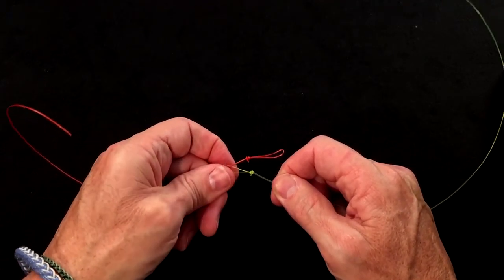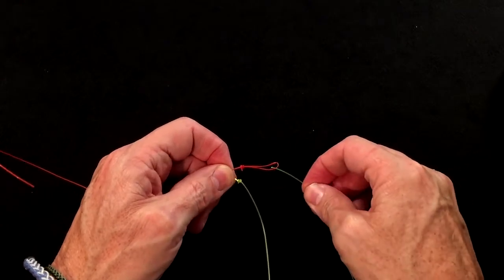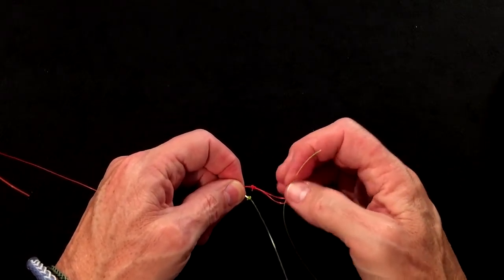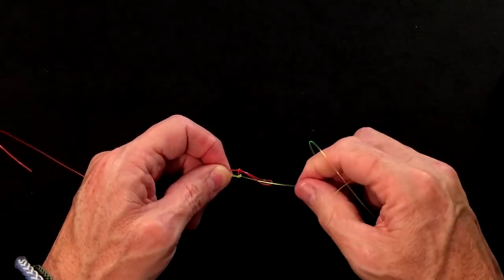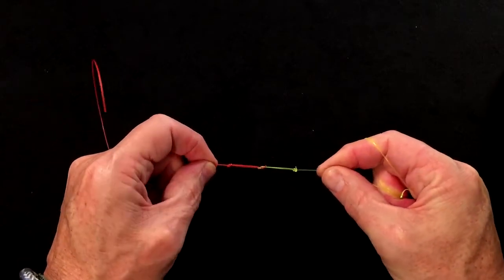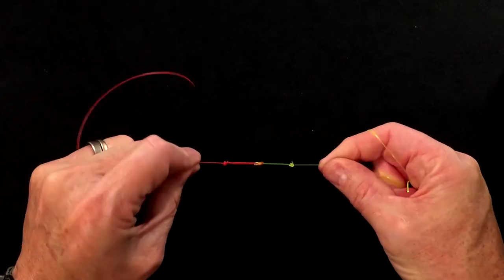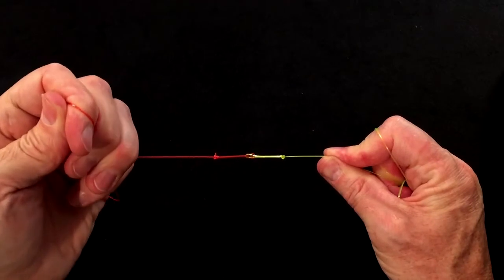Then take the end of B and it goes into A. ABBA. You just pull that one tight, and what happens when you pull this thing down is you get this nice square knot, reef knot kind of look. That is a correct joined loop-to-loop.